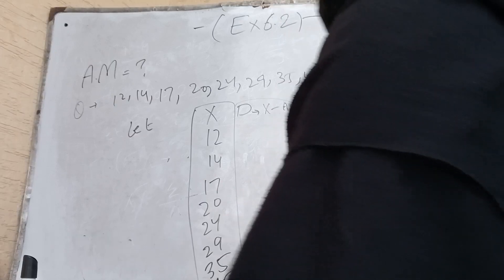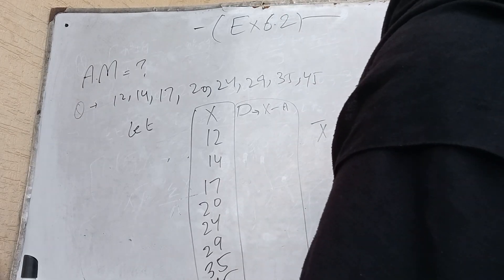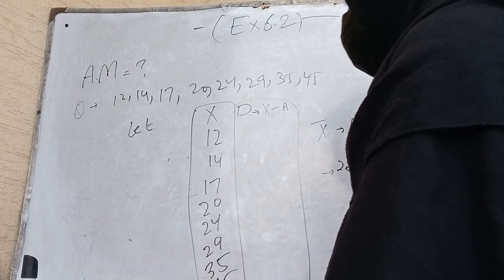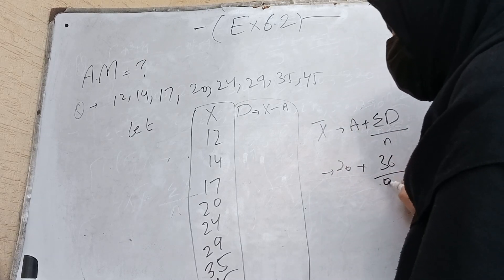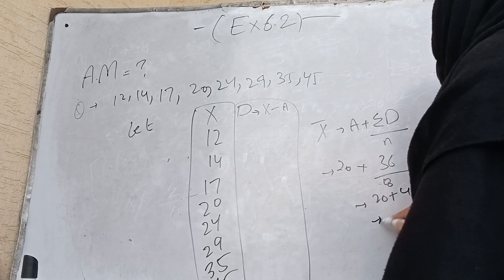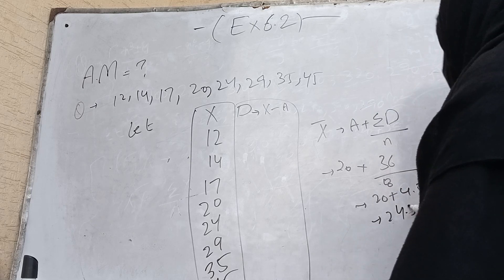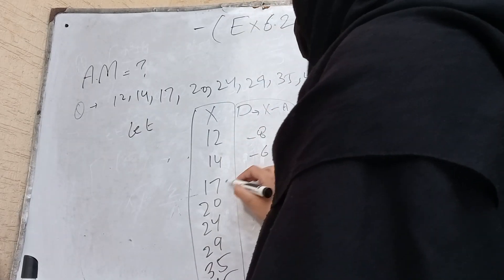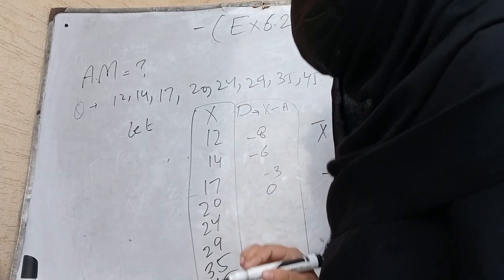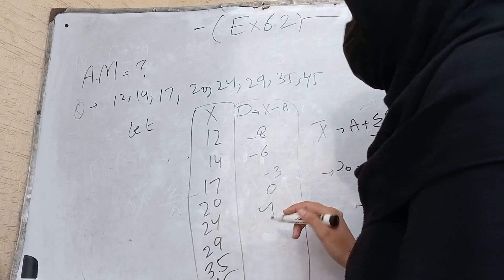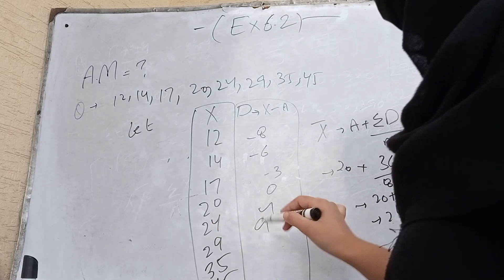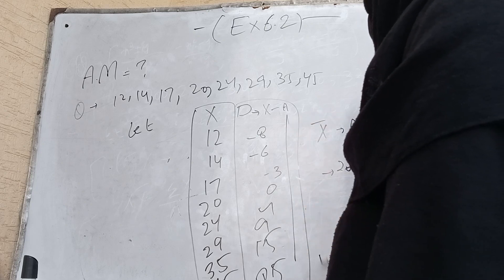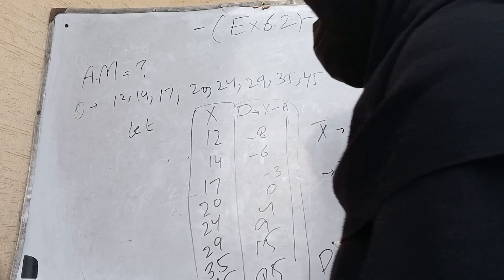The formula for indirect method is: arithmetic mean = a + (Σd / n). Here a = 20. Computing X − a: 12−20 = −8, 14−20 = −6, 17−20 = −3, 20−20 = 0, 24−20 = 4, 29−20 = 9, 25−20 = 5, 45−20 = 25. The sum of d = 36, so mean = 20 + (36/8) = 20 + 4.5 = 24.5.